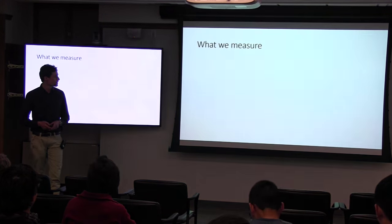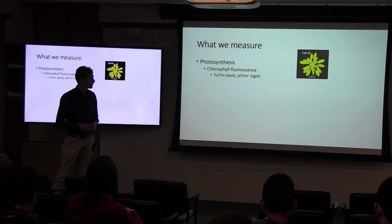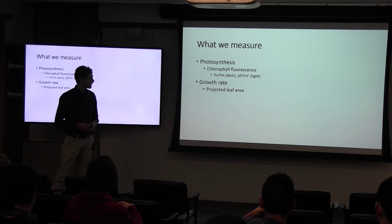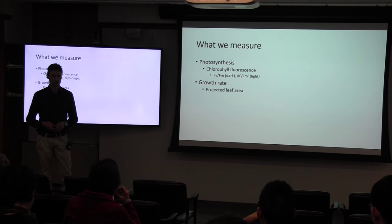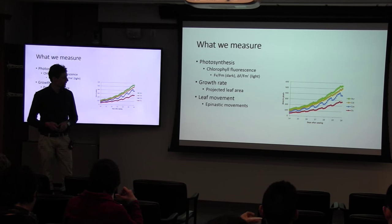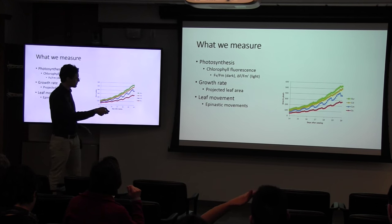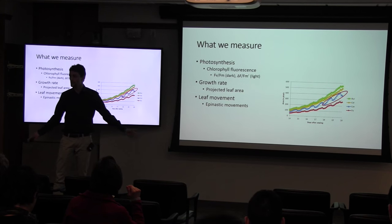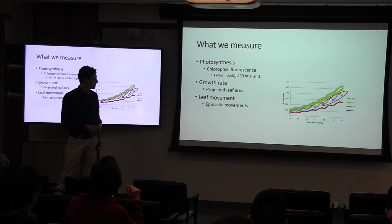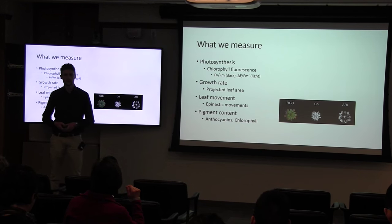The system could also measure a couple of other things. As well as photosynthesis, which we measured using chlorophyll fluorescence giving us these kinds of images, we also measured growth rate, which for Arabidopsis is pretty easy because it has this flat architecture - you can get an idea of plant size by measuring projected leaf area. From this we got other information such as leaf movement, because as you can see, the plants appear to get bigger and smaller as their leaves go up and down. We also had a spectral filter so we were able to measure specific wavelengths of light, giving us an idea of different pigment content in the leaves.